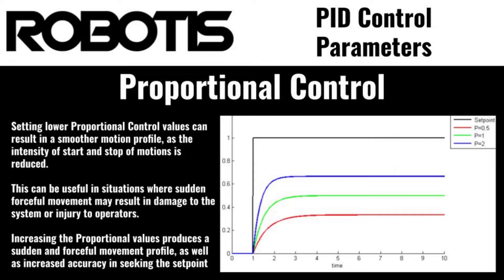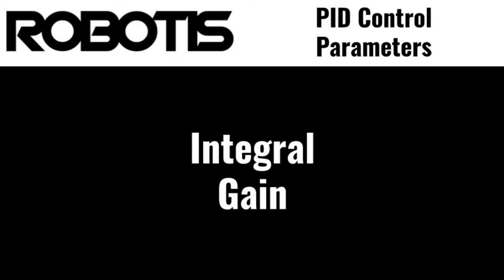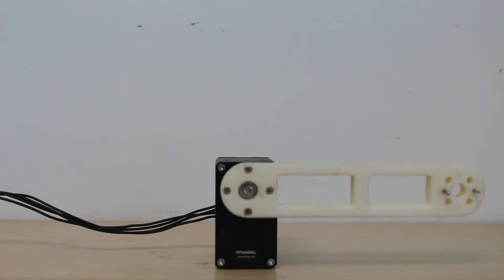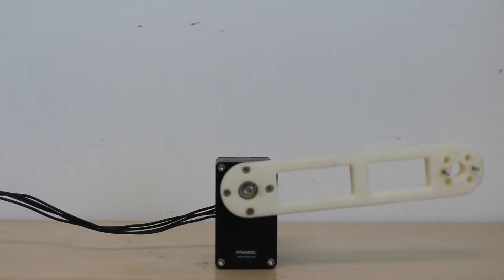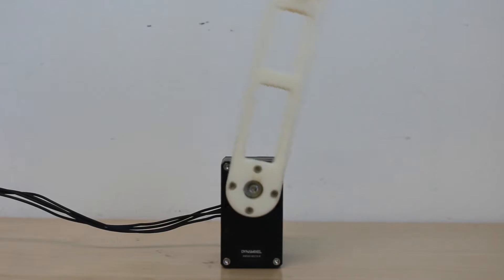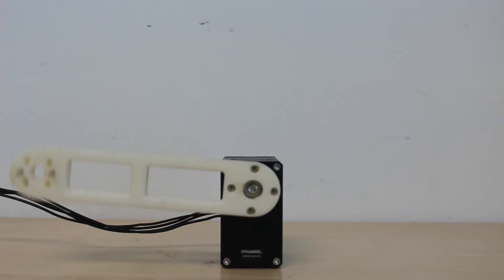If you're following along, be sure to reset your PID settings to default before the next section. The integral gain is a measure of the actuator's response to error over time. Higher values cause the actuator to more aggressively resolve smaller differences between the current position and the goal more quickly. This can be useful in combination with lower P gain values, allowing the servo to correct itself when it stops short or overshoots the goal. To demonstrate, set the P gain to 80 — you'll observe the actuator stopping just short of the desired goal. Now, setting the I gain to 1000 causes the servo to oscillate back and forth as it attempts to correct the small difference between the goal and its actual stopping point. This oscillation is the most common symptom displayed in systems where the I gain is set too high.